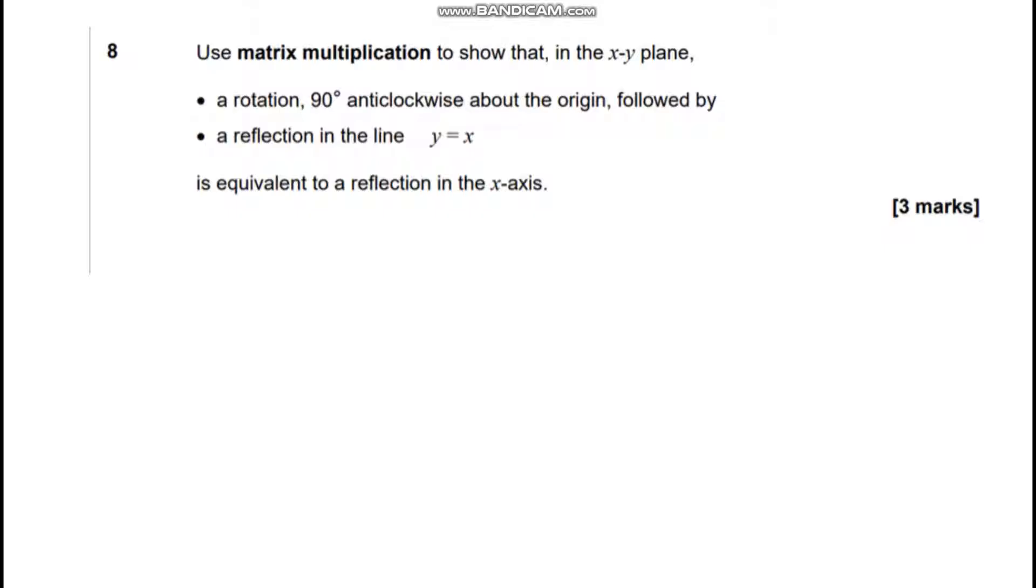What I'm going to do to begin with is just write out all my reflection matrices. So, if you're reflecting in the x-axis, you'll have 1, 0, 0, negative 1. Y-axis, it should be negative 1, 0, 0, 1. And in y equals x, you're going to have 0, 1, 1, 0.